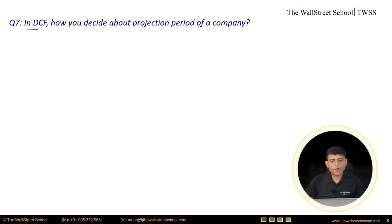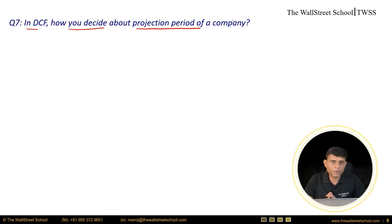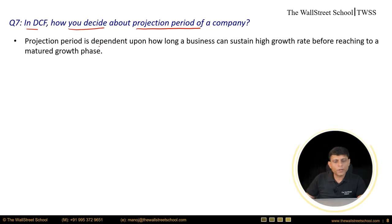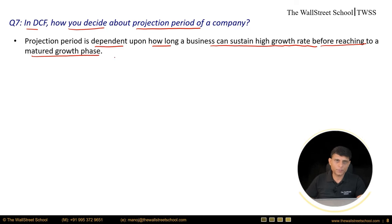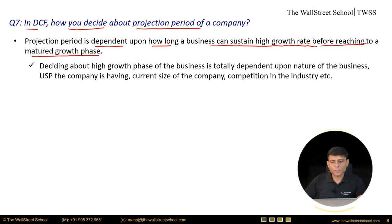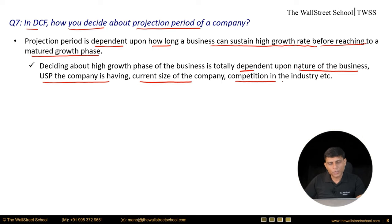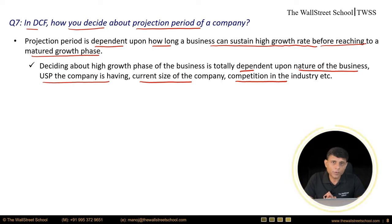Question number seven: in DCF, how do you decide about the projection period of a company? The projection period depends on how long the business can sustain a high growth rate before reaching a matured growth phase. This is dependent upon the nature of the business, the USP of the company, the current size of the company, and competition in the industry. If entry barriers are very strong, we can assume an extended high growth phase. If the company has a strong USP, the extended high growth phase can also be assumed; with no USP, the high growth phase would be limited.